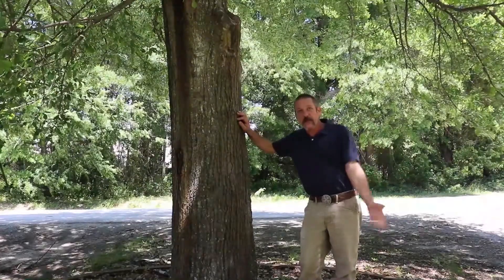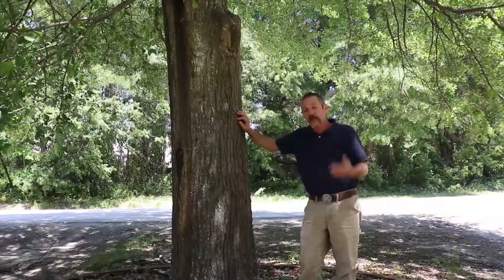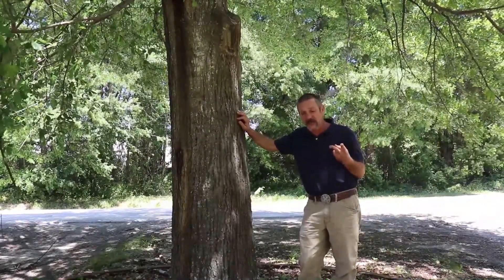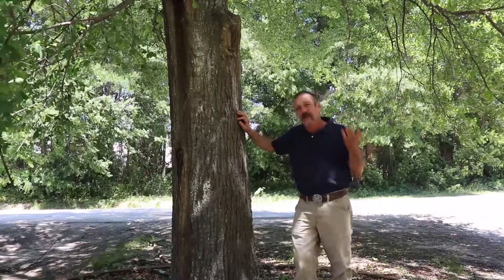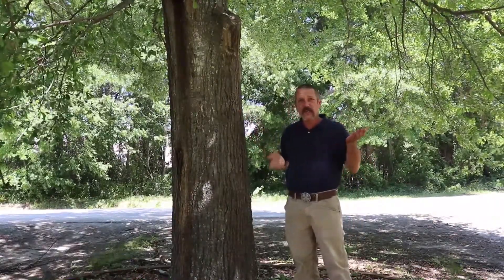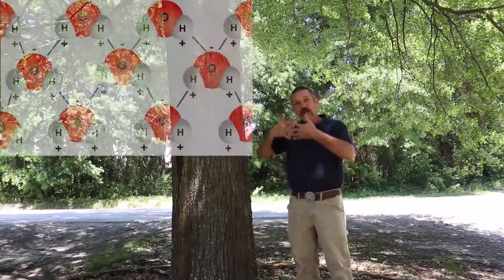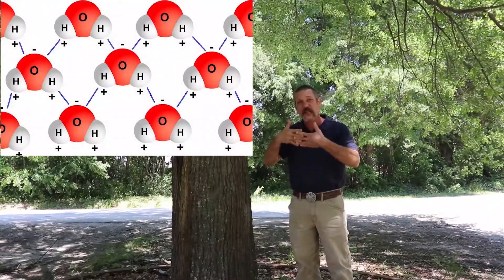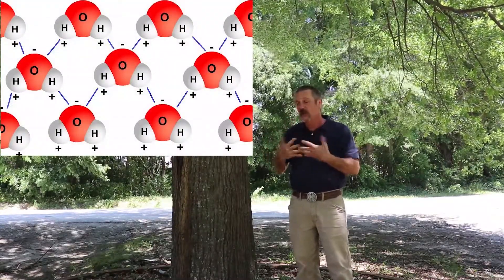The second and third property of water is cohesion and adhesion, which they kind of work together. We talked about how these negatively and positively charged molecules kind of hook together in a chain. That's the adhesion and cohesion.